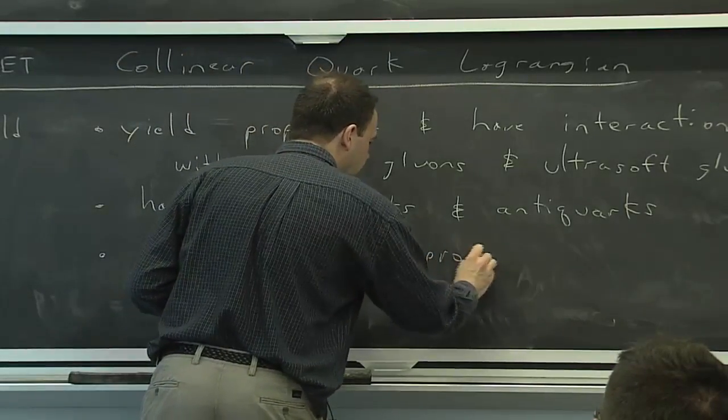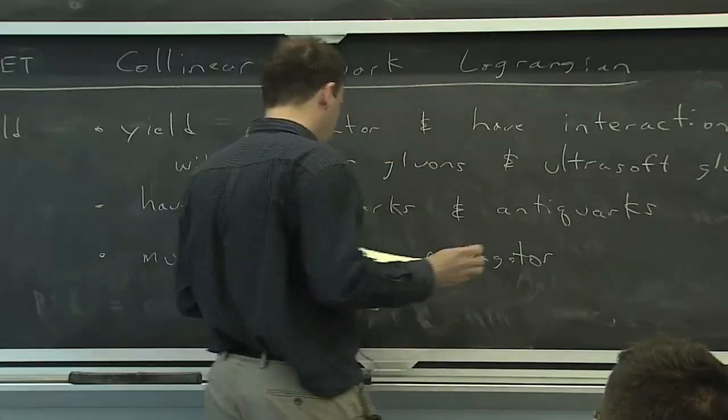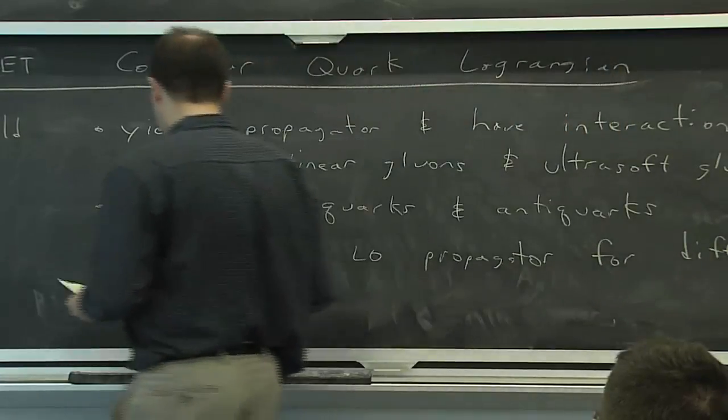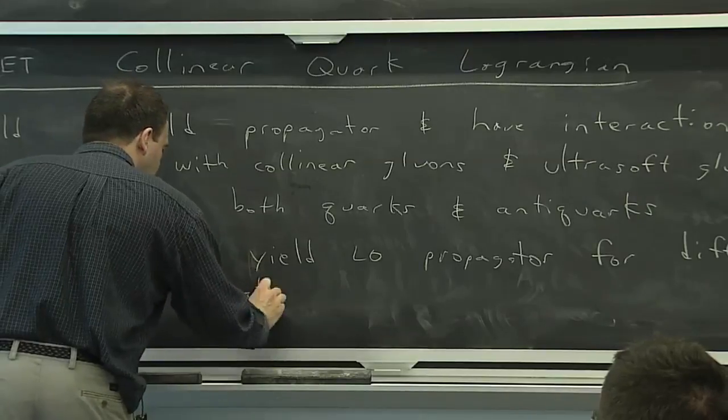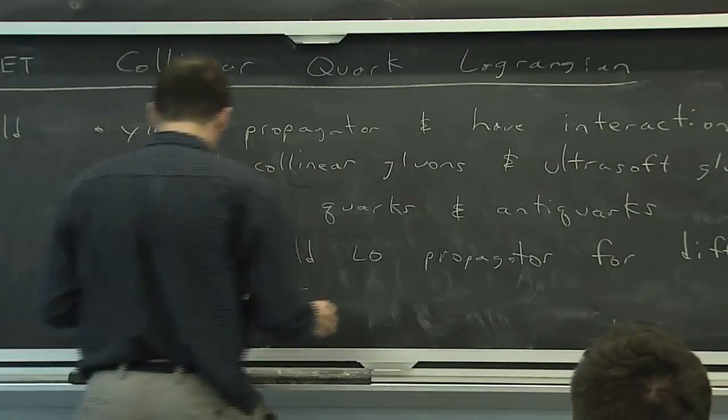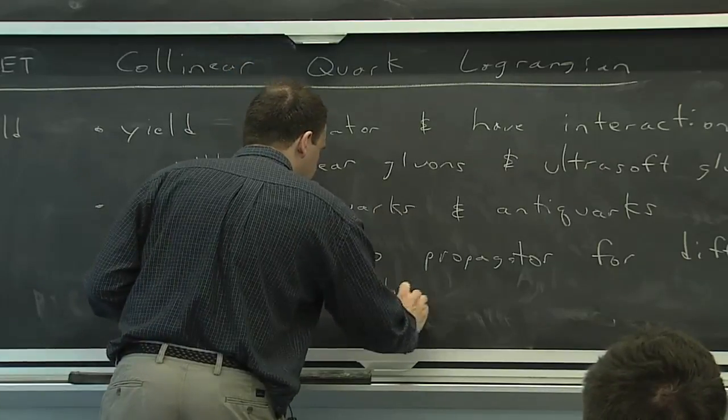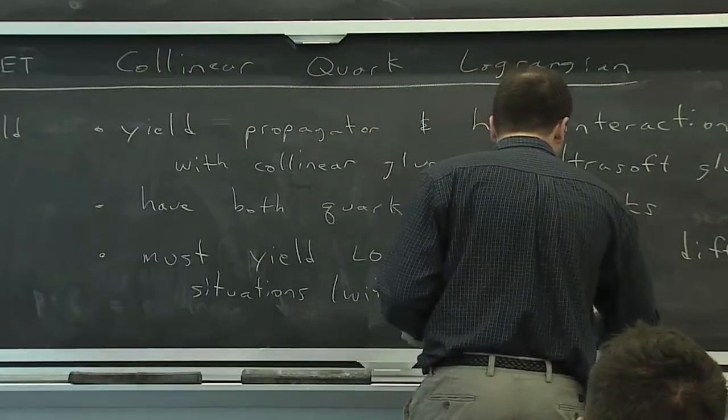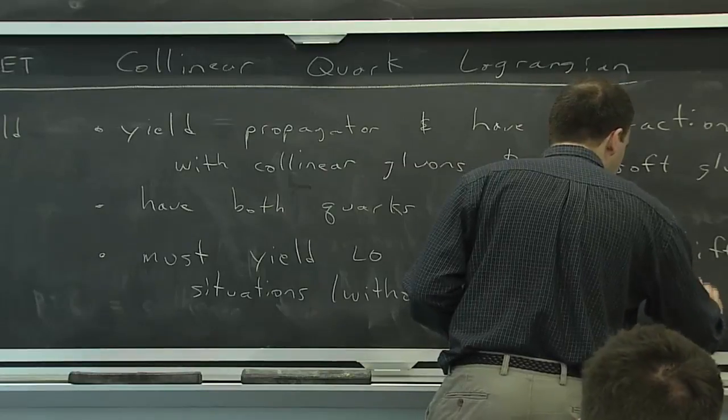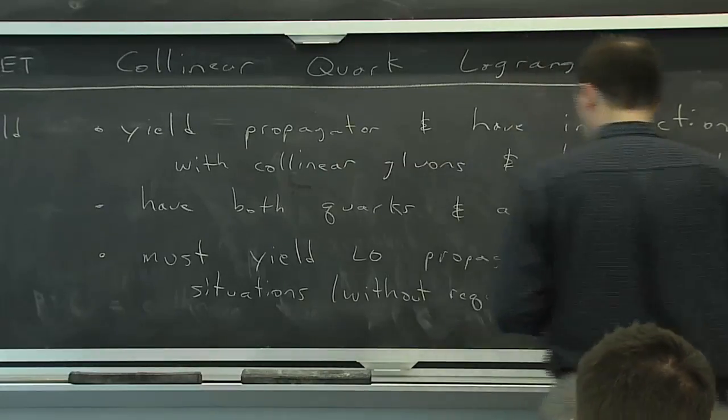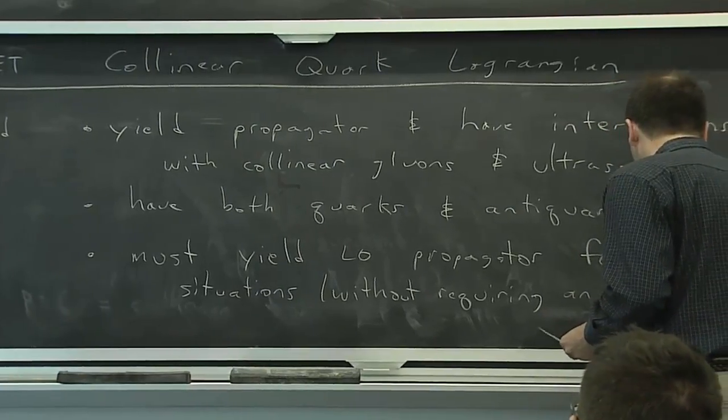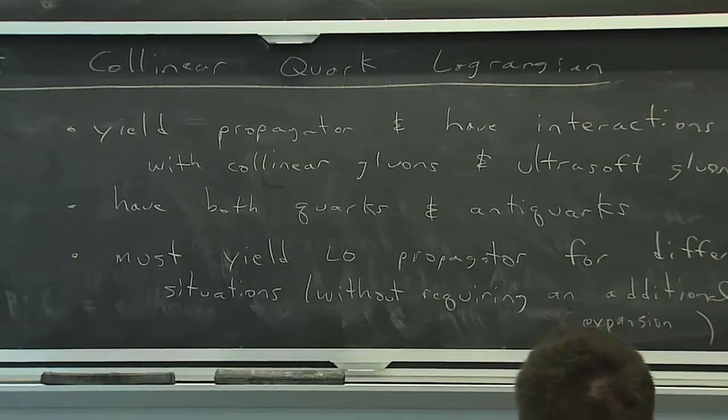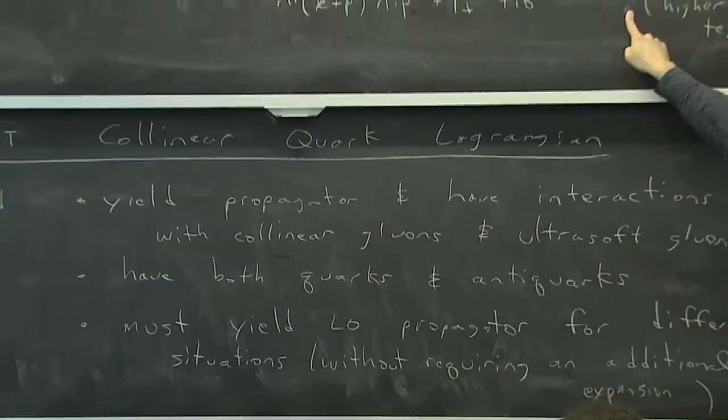And this third bullet is related to what I was just stressing, that we have to get a leading-order propagator in different situations. So somehow, the effective theory has to know something about the size of momenta that are running through it. And if we want to be strict about defining the effective theory and defining the leading-order term, it's not OK that we expand later. We really have to expand ahead of time. And so whatever the Lagrangian is, it should just give this. And it should just give this. And it should not give these dots.